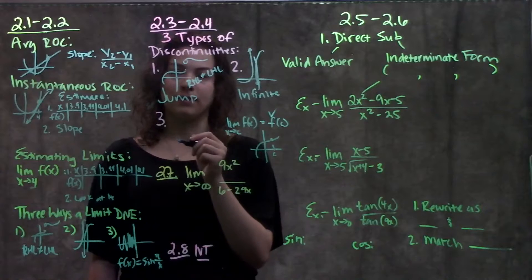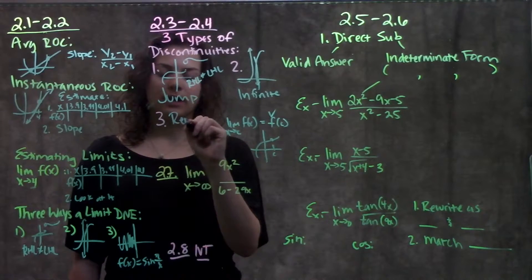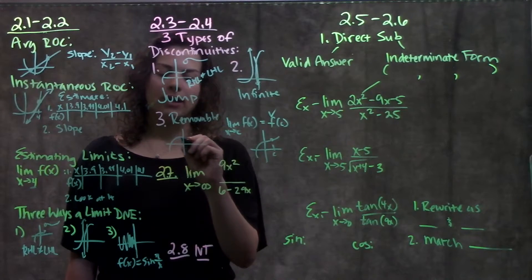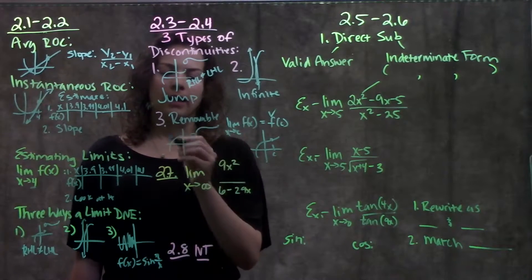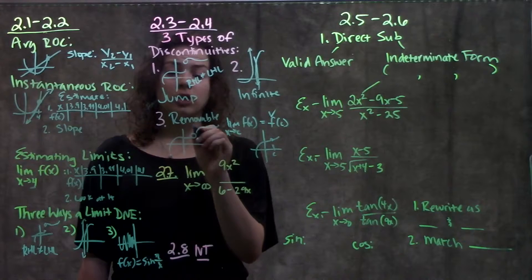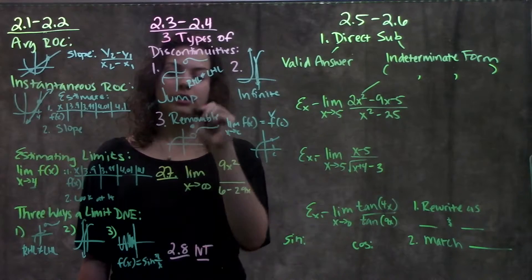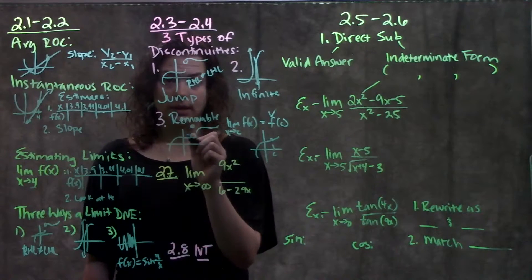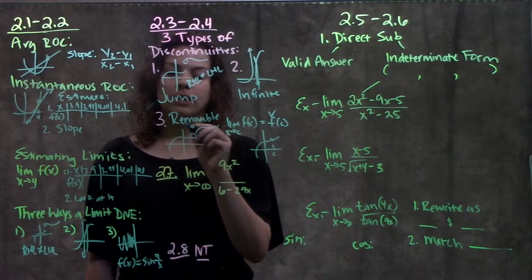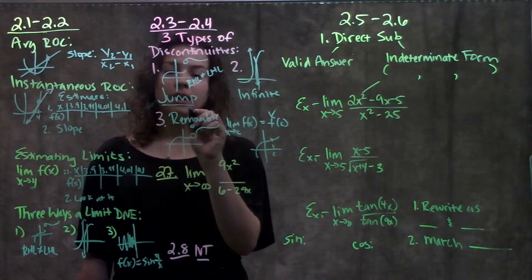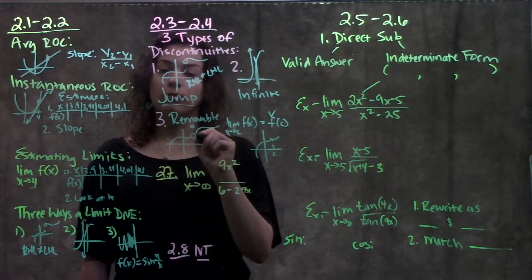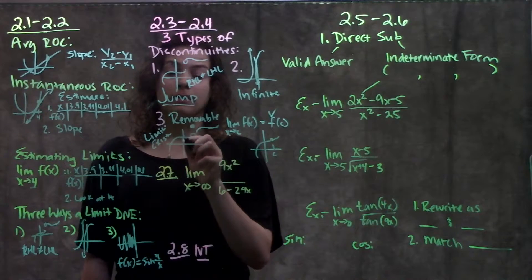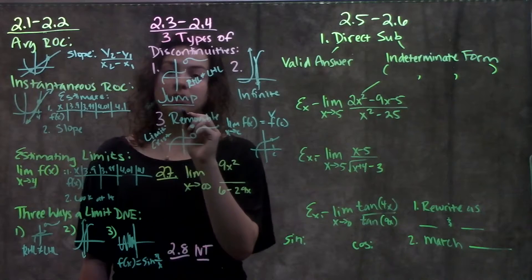Third type of discontinuity is called a removable discontinuity. What that looks like is it's just kind of like a hole in a graph. You have a function, and all of a sudden it's not defined somewhere, and the function keeps going. The function could be defined at another point here, so there could be a dot drawn somewhere else, or there could be no dot. Either way, it's still a removable discontinuity. Now, key thing to note between removable and jump discontinuities: jump discontinuities, limit does not exist. Removable discontinuities, limit does exist. That'll be true for any type of removable and any type of jump discontinuity.